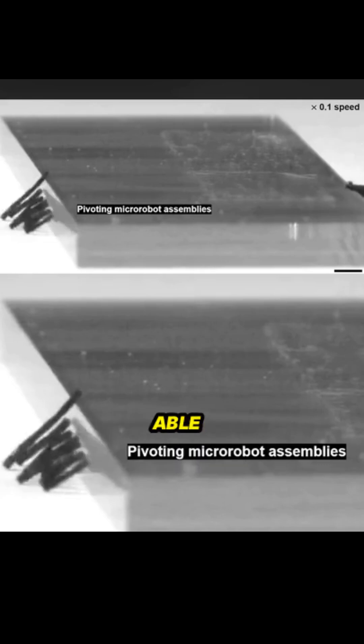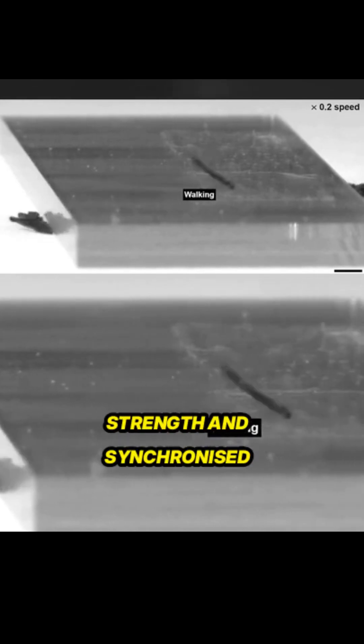The micro-robots were able to assemble into a group and coordinate their movements to walk over an obstacle. By leveraging their collective strength and synchronized actions, they successfully overcame barriers.